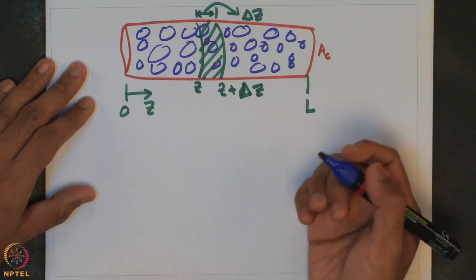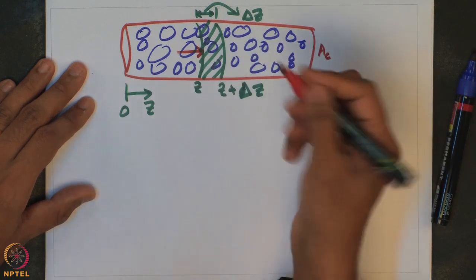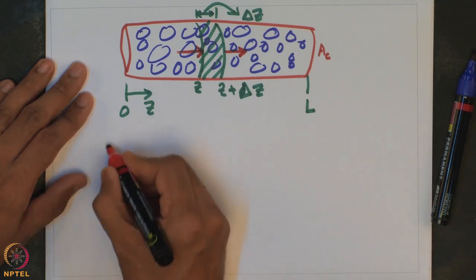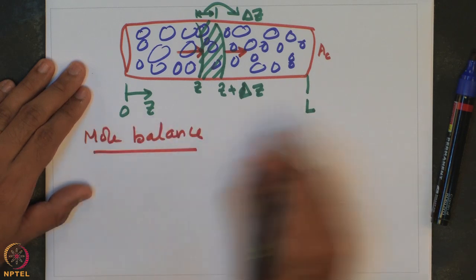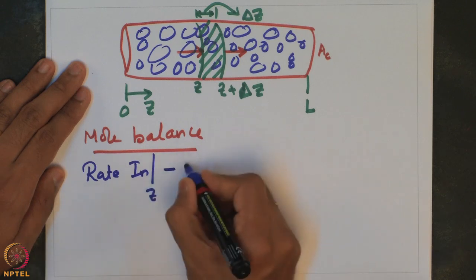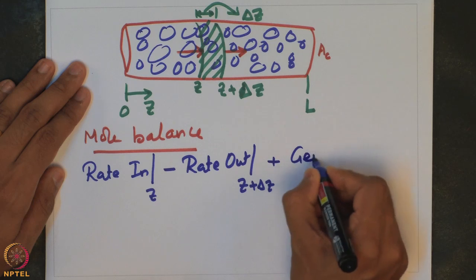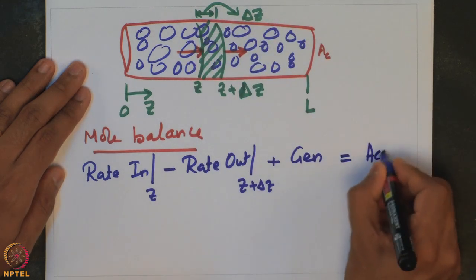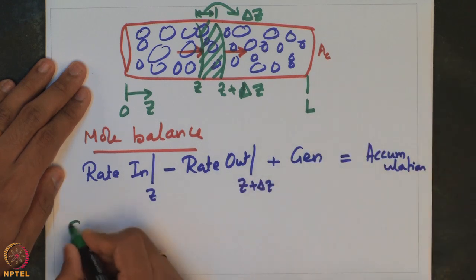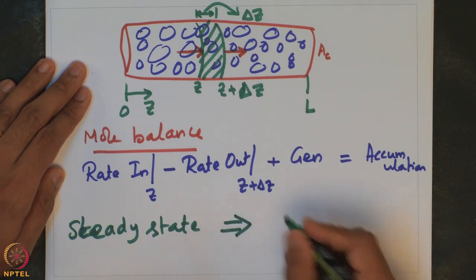How do we write a mole balance? We need to define the molar rate at which the species is entering this element at z, and the molar rate at which the species is leaving at z plus delta z. The mole balance is: the rate at which the species is entering at z, minus the rate at which species is leaving at z plus delta z, plus whatever is generated in that control volume, equals accumulation. If we assume steady state, accumulation is zero and this term cancels out.